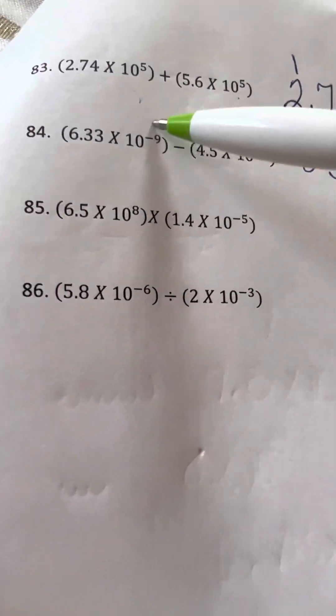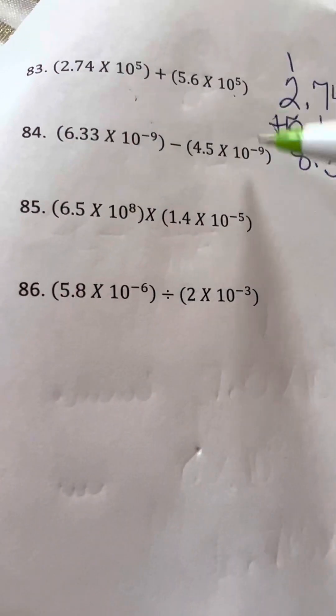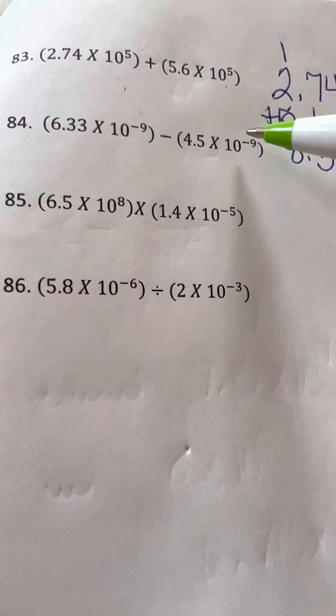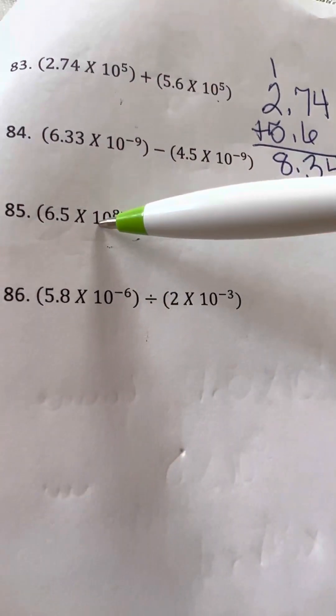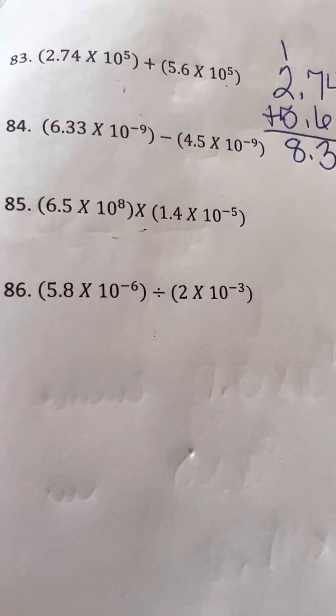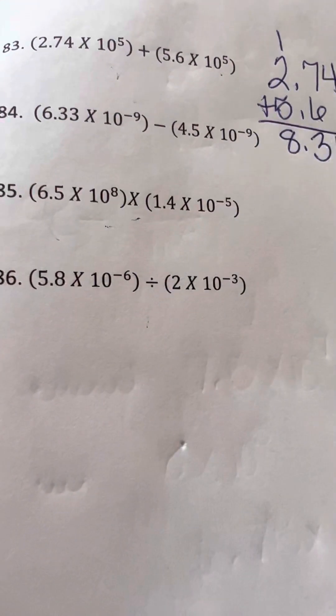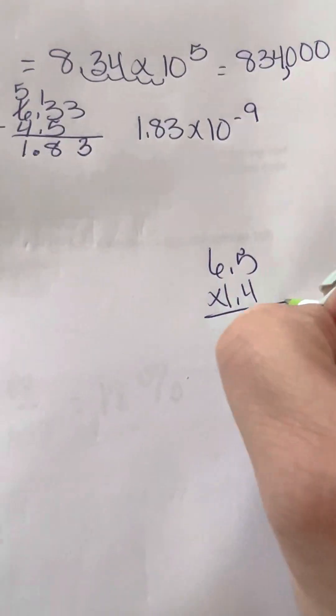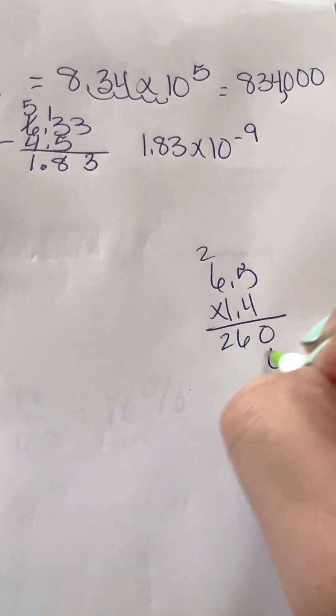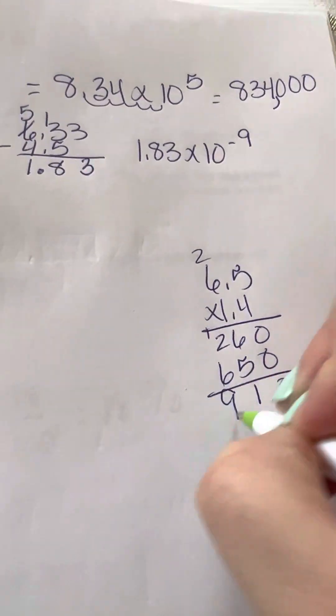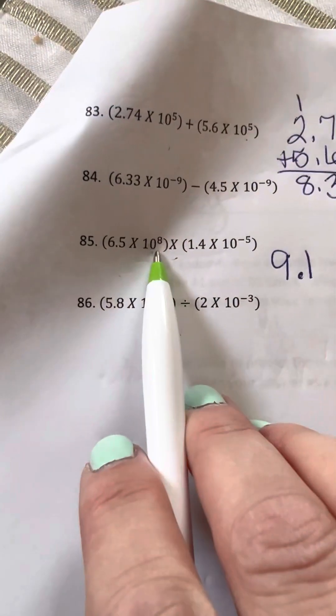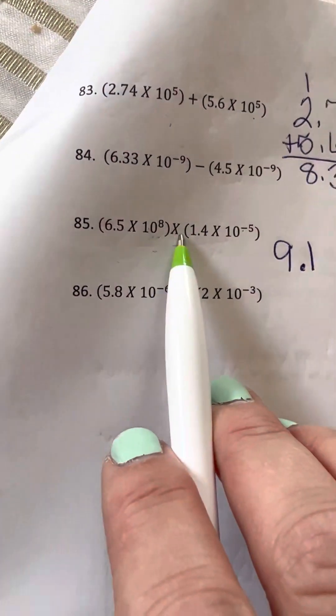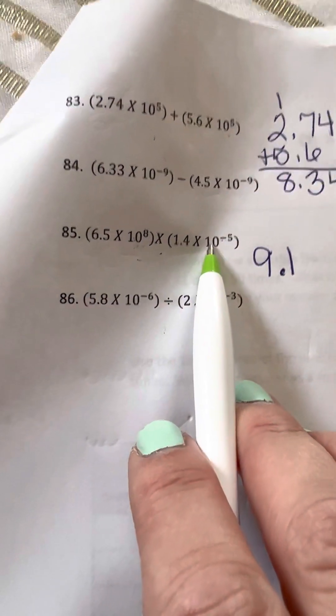Now on this one, so add and subtract, if they're the same, which I'm only going to give you ones that are the same on the test, all you have to do is keep this 10 to the whatever. On multiplication and division, you do the operation also to the exponents, which makes it pretty easy. So 6.5 times 1.4. So I'm going to come over here so I have room.